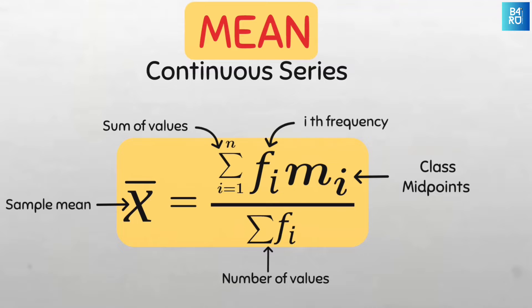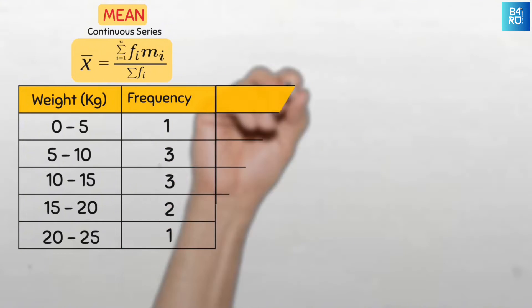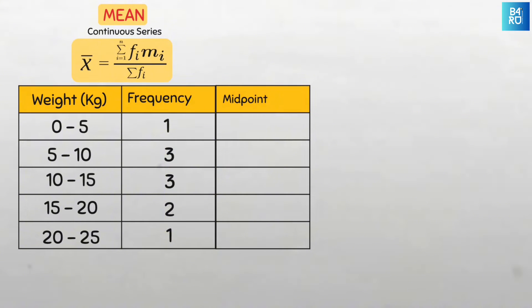Now let's apply this formula. First, let's work on the numerator. We'll first find the midpoints then multiply each midpoint by the respective class frequency and finally sum all of them together. So let's find the midpoints.